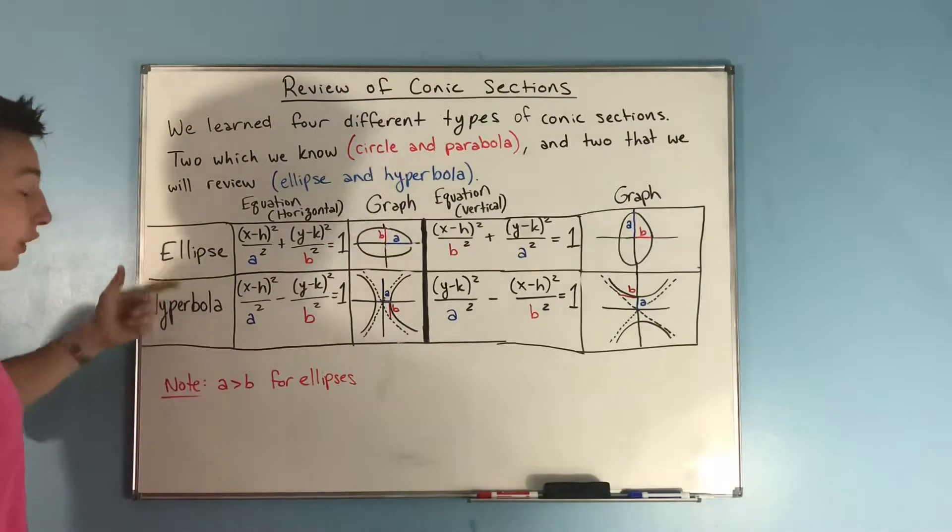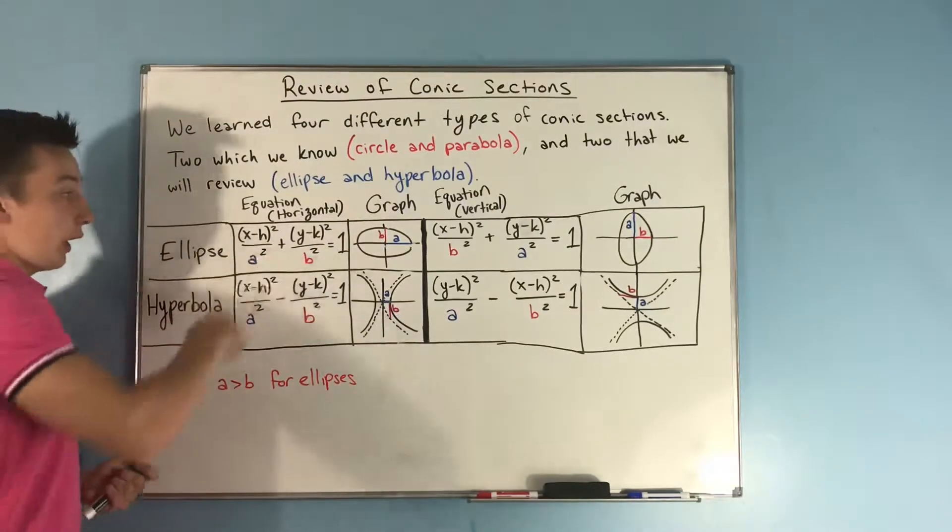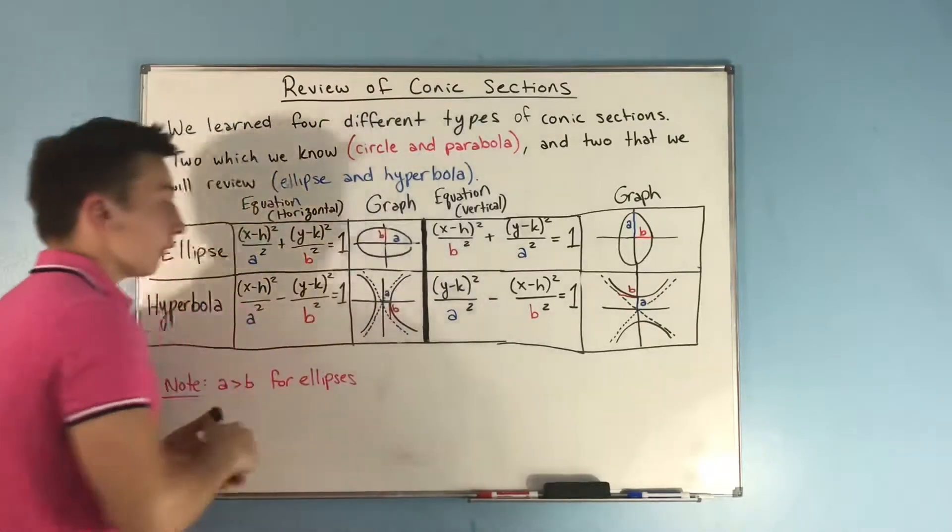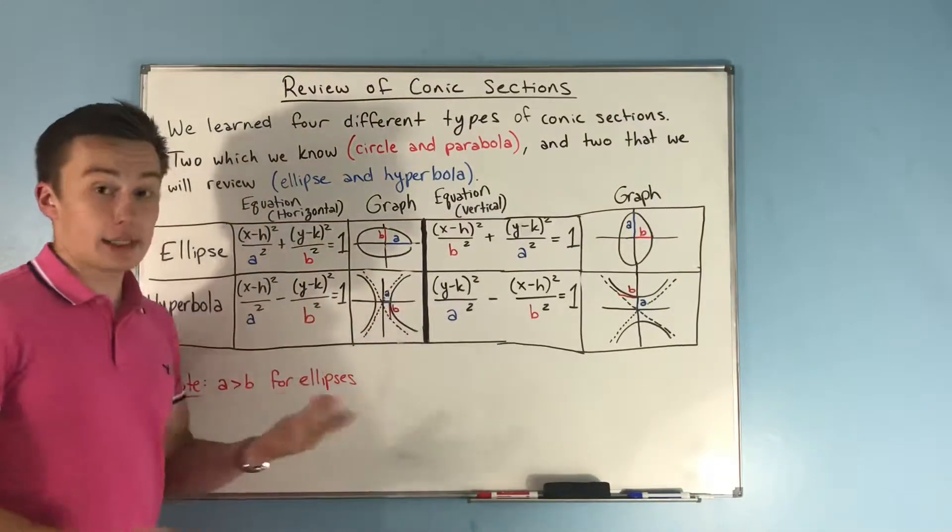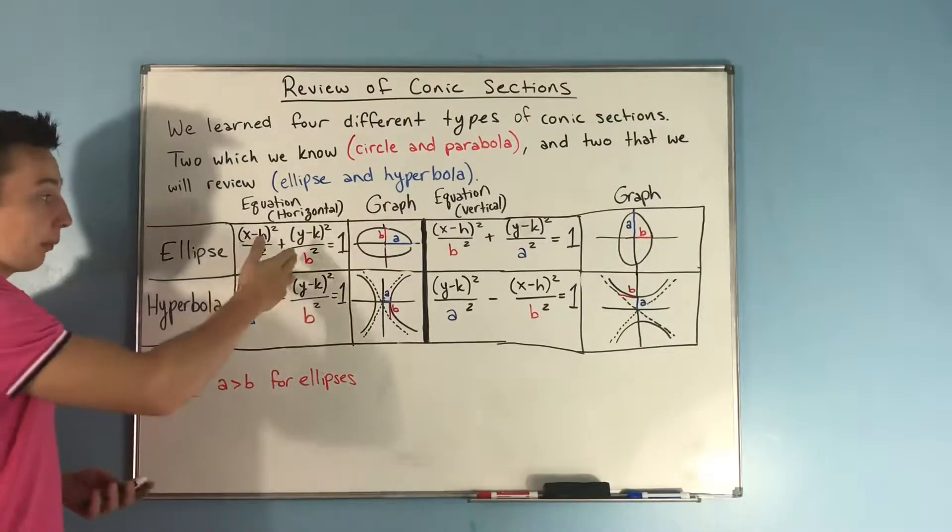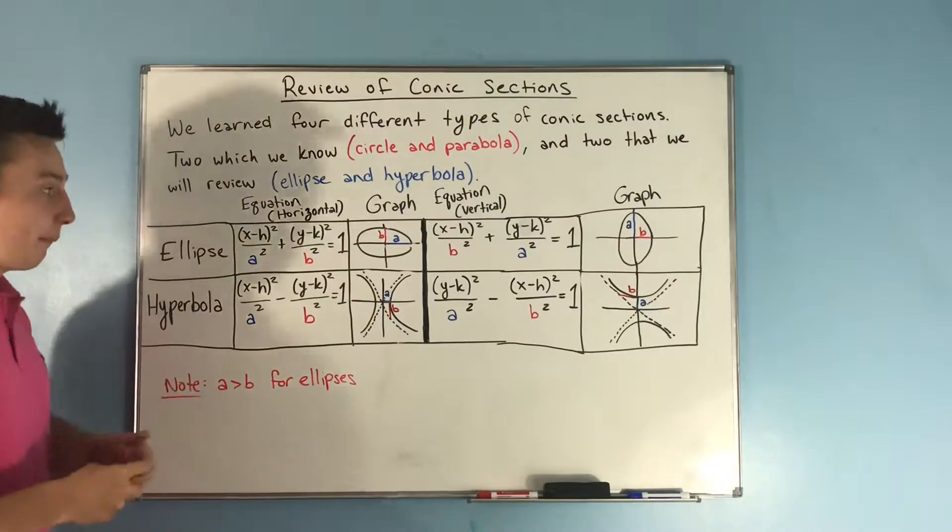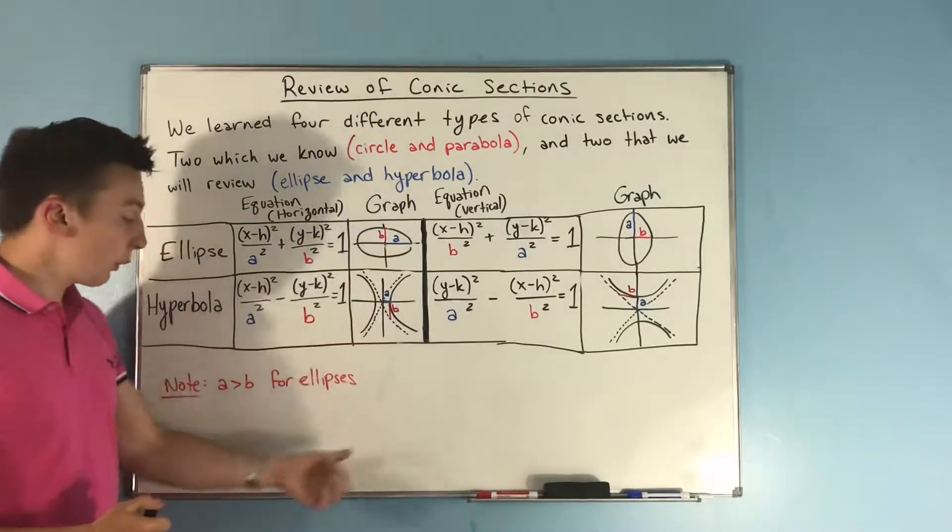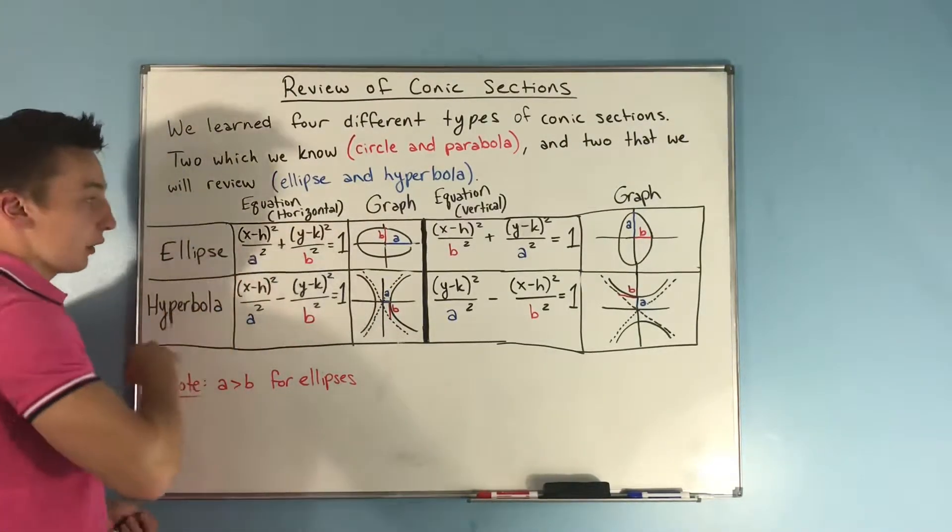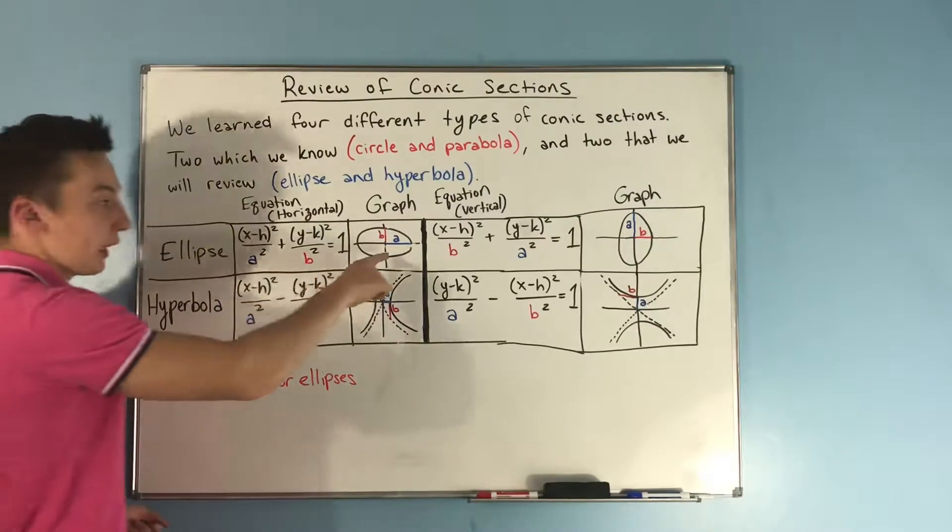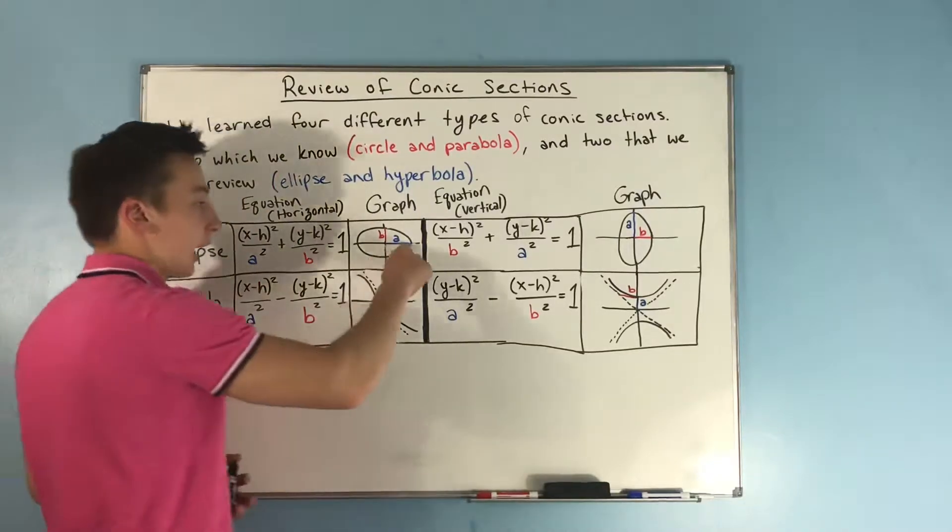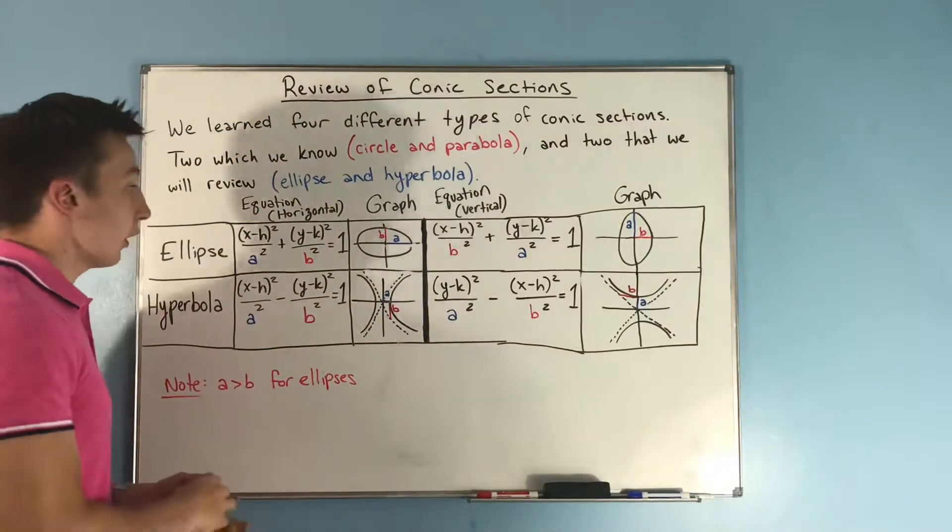Now, first we're going to start with the ellipse. The ellipse for a horizontal ellipse, meaning its major axis is going to be parallel to the x-axis. That is x minus h quantity squared over a squared plus y minus k squared over b squared, and that's going to equal one. And for ellipses, we're going to have a is greater than b. So you notice that we have this a under x. And this a is representing the semi-major axis. It's representing the semi-major axis, and a is the length of that.